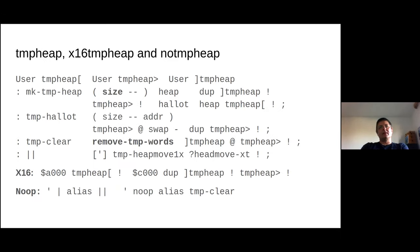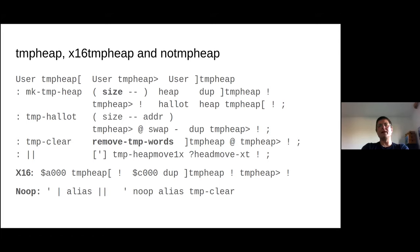This also introduced two new words which take the function of previously setting or resetting the variable: PIPE-ON and PIPE-OFF. Those have proven quite useful. With that in place, the implementation was relatively easy. I ended up doing three different implementations for what I call the temp heap: a default one which places the temp heap on the heap, allocating a fixed size at the beginning of the compile.